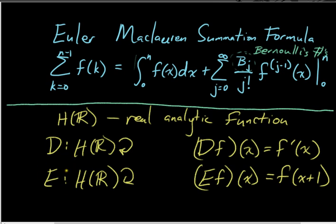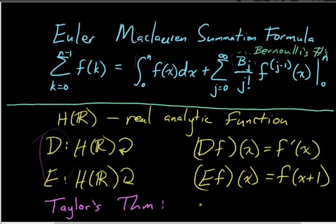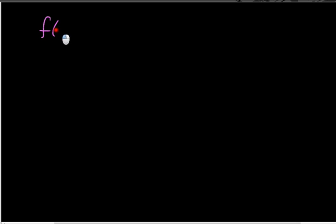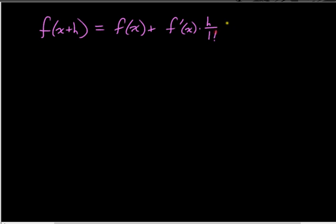Let me tell you why this is a really interesting thing to do. Taylor's theorem, which you learned in calculus 2, can actually be written really succinctly in terms of these operators D and E: it's just that E equals the exponential of the differential operator. Taylor's theorem says f of x plus h equals f of x plus f prime of x times h over 1 factorial, plus the second derivative of x times h squared over 2 factorial, the third derivative times h cubed over 3 factorial, and so on.